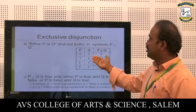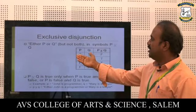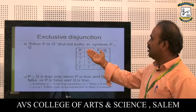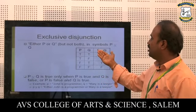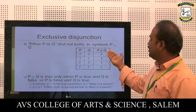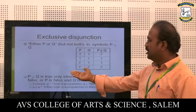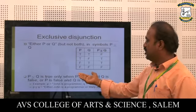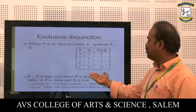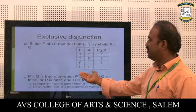Exclusive disjunction: Either P or Q but not both. In simple terms, P XOR Q is true only when P is true and Q is false, or when P is false and Q is true.